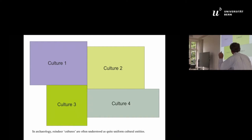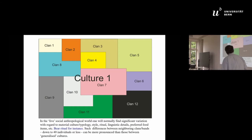If you look at here four different cultures, in archaeology we tend to think that they are more or less internally homogeneous. And if we stand in the field looking at a reindeer culture, for my sake mainly the Evenk, we found out that they are bloody different. There is a number of clans, and they vary with regard to material culture, typology, style, ritual, linguistic details, preferred food items even, etc.